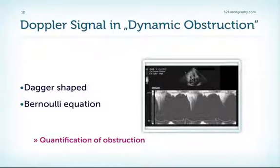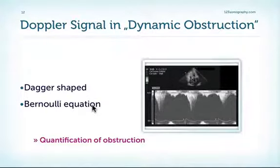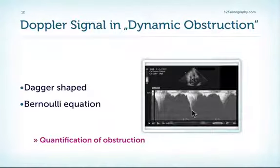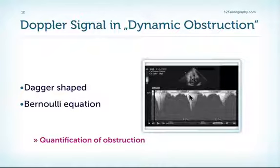We also find another typical sign: with continuous wave Doppler of the LVOT, we can see an increased velocity, which reflects the gradient. You can quantify gradients with the Bernoulli equation. You also see a typical shape of the LVOT signal — the shape of a dagger. Remember, obstruction of the LVOT has a different signal than aortic stenosis; we have a dagger shape, which is typical for this pathology.